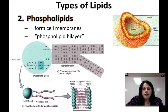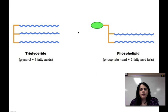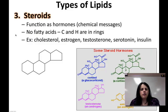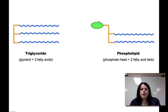Here's the quick difference between phospholipids and triglycerides: the triglyceride has a glycerol with three fatty acids, and the phospholipid has a glycerol with two fatty acids and a phosphate head that makes that part water-loving instead — we call it hydrophilic.